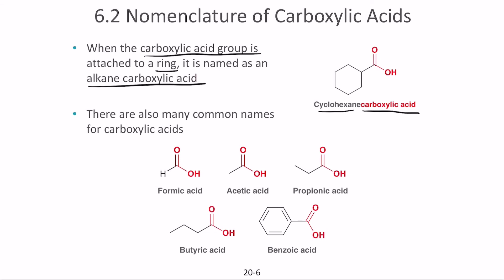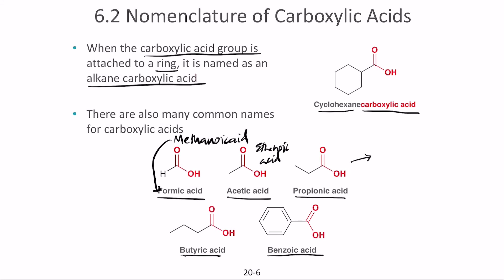Some carboxylic acids have common names. Formic acid is the compound sprayed into your body during an ant bite. Acetic acid is commonly found in vinegar. You also have propionic acid, butyric acid, and benzoic acid. These common names differ from the IUPAC names: formic acid is methanoic acid, acetic acid is ethanoic acid, propionic acid is propanoic acid, and butyric acid is butanoic acid.